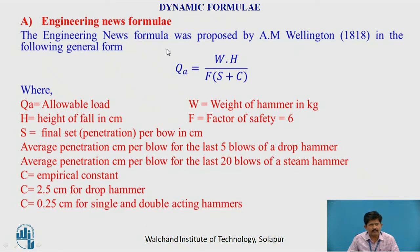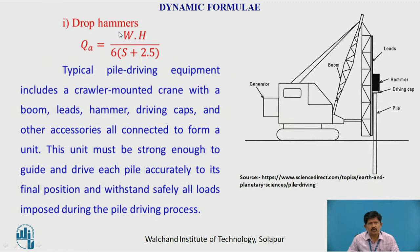The Engineering News formula was proposed by A.M. Wellington in 1888 in the general form: QA = W·H / (F·(S + C)), where QA is the allowable load, W is the weight of the hammer in kg, H is the height of fall in cm, F is the factor of safety taken as 6, S is the final set or penetration per blow in cm, and C is an empirical constant. For a drop hammer, the modified formula is: QA = W·H / (6·(S + 2.5)).